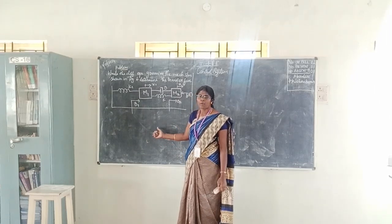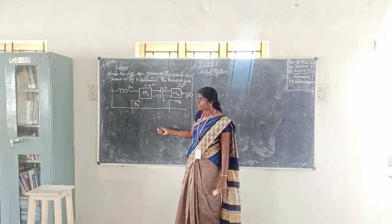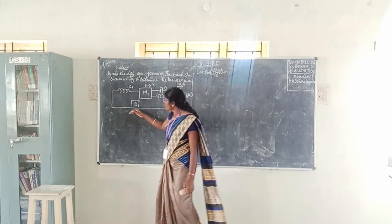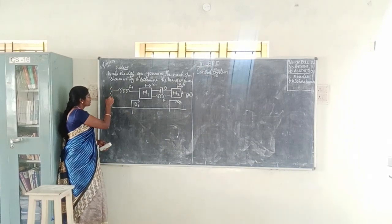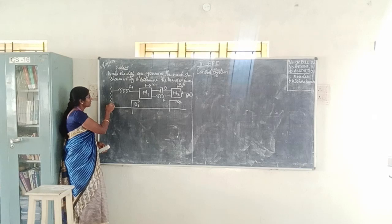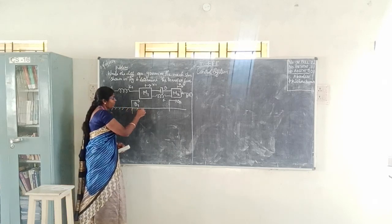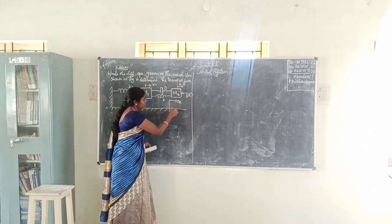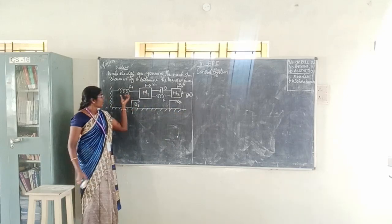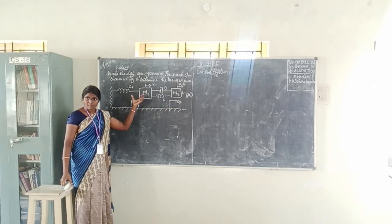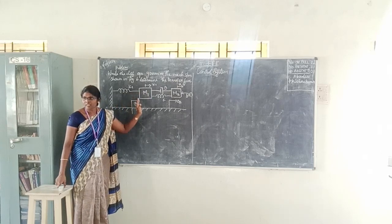This problem is based on a mechanical system. The problem statement is: write the differential equation governing the mechanical system as shown in the figure. The three components of this mechanical system are mass, dashpot, and spring, in that order.